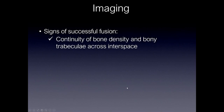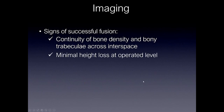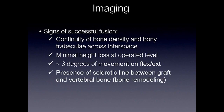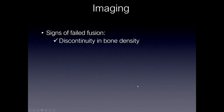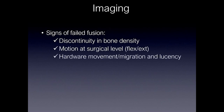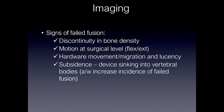Signs of successful fusion include continuity of bone density and bone trabeculae across the interspace, minimal height loss at the operated level, less than three degrees of movement on flexion and extension, and presence of a sclerotic line between the graft and the vertebral bone — otherwise known as bone remodeling. Signs of failed fusion include discontinuity in bone density, motion at the surgical level on flexion and extension, hardware movement or migration and lucency, and subsidence, where the device sinks into the vertebral body and is associated with increased incidence of failed fusion.